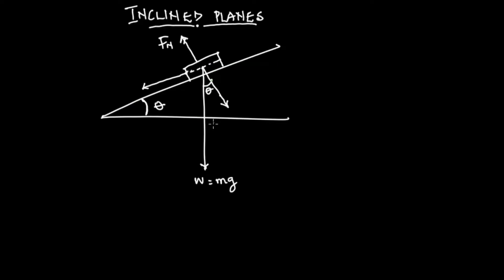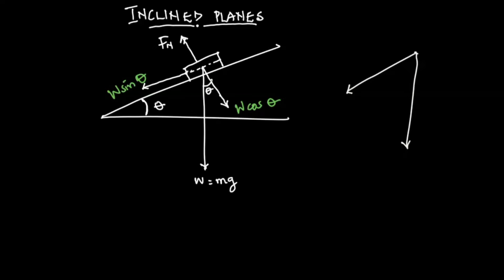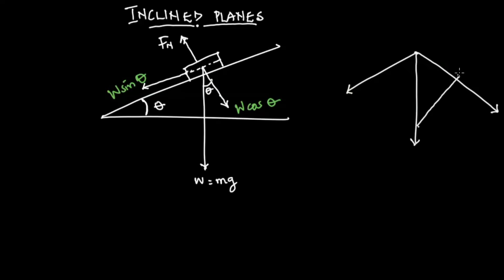So when we resolve the weight in the direction perpendicular to the plane we get w·cosθ, and when we resolve it in the direction along the plane we get w·sinθ. To explain how we got that, let's bring out the triangle: we have the weight acting downwards and we have the force in the direction opposite to the normal force, and we draw a line parallel to join this line and the weight.